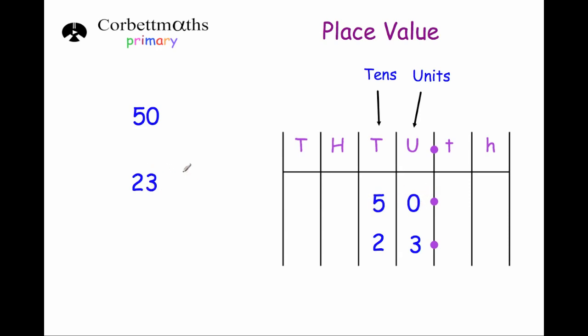23, on the other hand, has got 2 tens — that's 20 — and it's got 3 units, so we would write a 2 in the 10s column and a 3 in the units column.